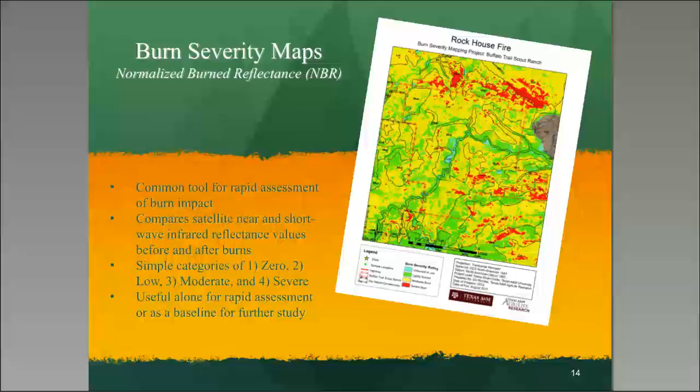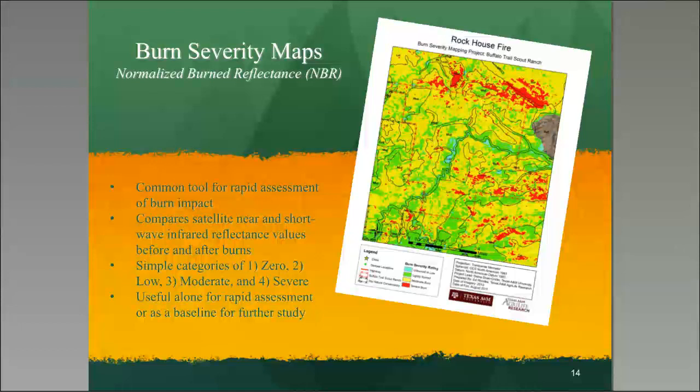We call them normalized burn reflectance maps. They're a common tool for rapid assessment of burn impact. On the maps, different colors represent different categories of burn severity: blue is unburned to low, green is lightly burned, yellow is moderately burned, and red is severely burned. So if you're a landowner and you want to know what areas to address first, you go to those red areas. To calculate the actual maps, they compare satellite near and shortwave infrared reflectance values before and after the burns, so it's important to obtain two different scenes — one before and one after the fire.